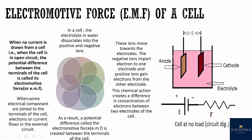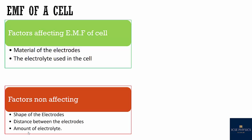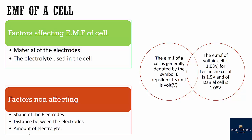When some electrical components are joined to the terminals of a cell, electrons or current flows in the external circuit. Factors affecting EMF include: material of electrodes and electrolyte used in the cell. Non-affecting factors include: shape of electrodes, distance between electrodes, and amount of electrolyte. EMF is denoted by the symbol epsilon and is measured in volts. It is a distinct characteristic, different for different cells — for a voltaic cell it is 1.08 V, for a Leclanché cell it is 1.5 V, and for a Daniel's cell it is 1.08 V.